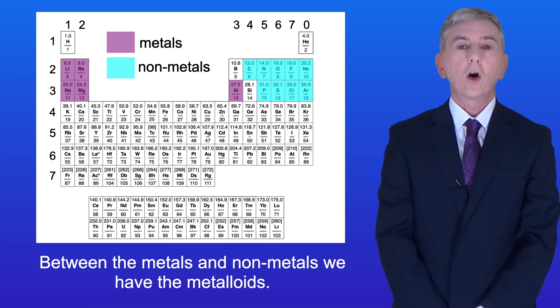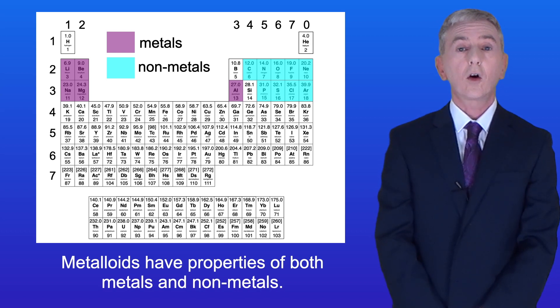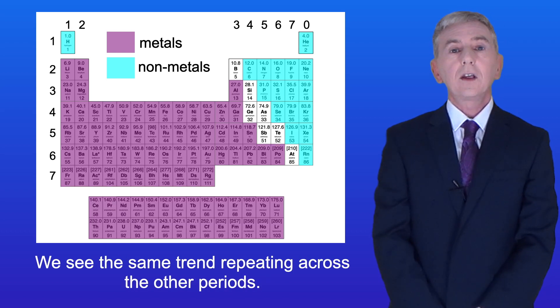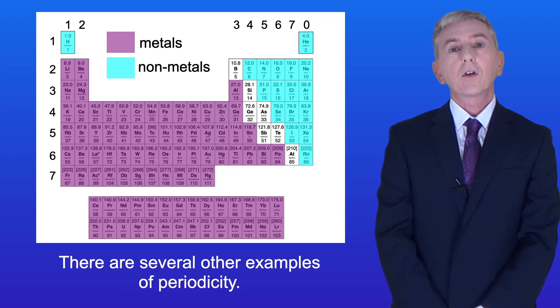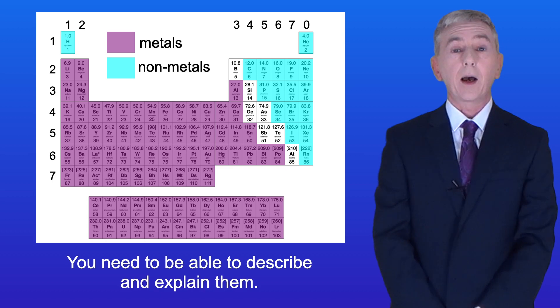Between the metals and non-metals we have the metalloids, and we can see this same trend repeating across the other periods. Scientists call a pattern of repeating trends periodicity. There are several other examples of periodicity and you need to be able to describe and explain them.